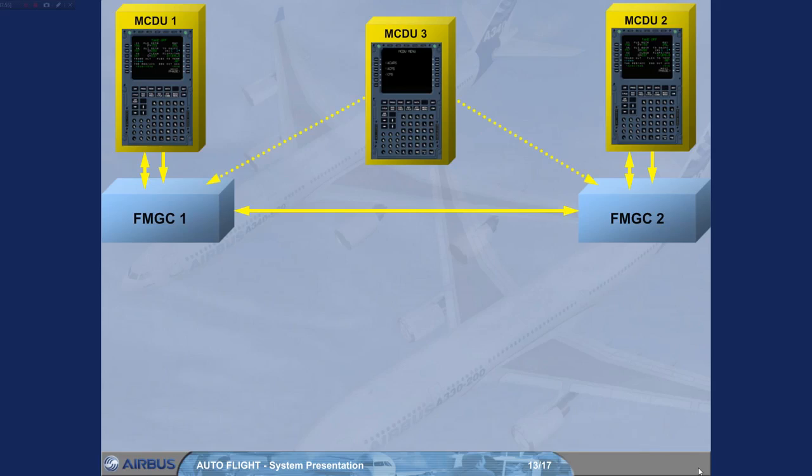In normal operation, the third MCDU is used for other functions, such as ACARS or CMS.